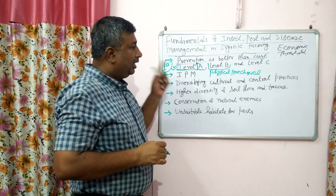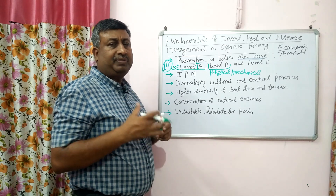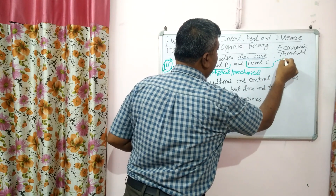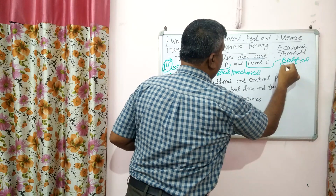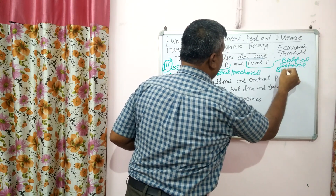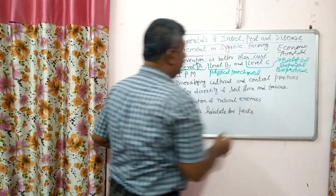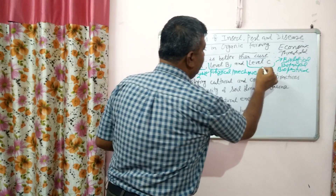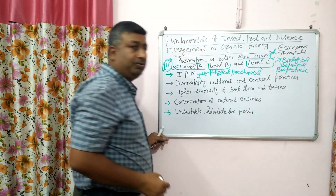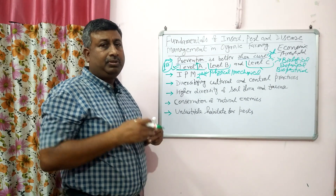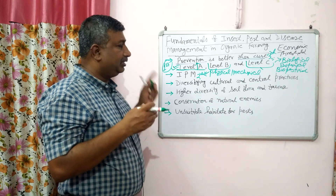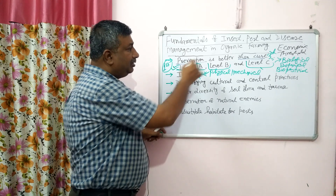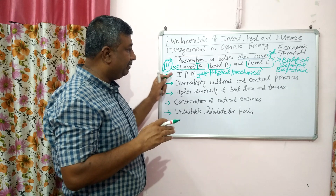If Level A practices are not sufficient to control insects, then Level B physical methods are used. Level C comprises biological methods — using botanicals, biopesticides, or microbial insecticides. Level B is the second line of defense, used when Level A is insufficient. Level C is the third line of defense, used when both Level A and Level B practices are not sufficient to control the insect population.